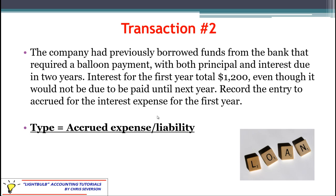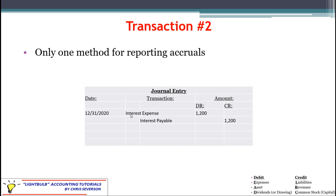Transaction number two is another accrued expense dealing with interest. The interest for the first year totaled $1,200, even though it will not be paid until next year. The entry is a debit to interest expense and a credit to interest payable for $1,200.